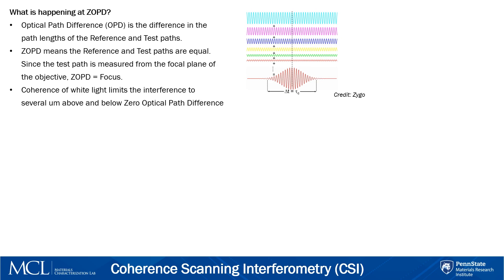The schematic diagram used in the previous slide is valid for monochromatic light, but the Zygo NextView 3D uses white light centered around 570 nm, giving rise to some particularly useful phenomena regarding interference based on coherence length. Before diving too deep into this topic, it's important to define a few key terms. The optical path difference is the difference in path lengths between the reference and test paths. ZOPD stands for zero optical path difference and occurs when the reference and test path lengths are equal. Since the test path is measured from the focal point of the objective, ZOPD also corresponds to when the sample is in focus.